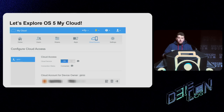We now had a concept: impersonating an IoT device and leveraging that impersonation to act on behalf of the device. In Western Digital's case, we impersonated the device and waited to get the user token. Since we competed at Pwn2Own, we wanted to leverage this concept for Synology as well.